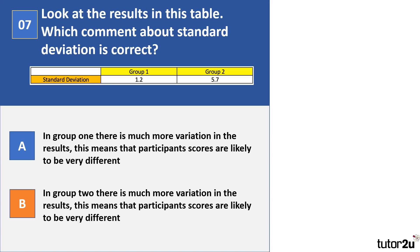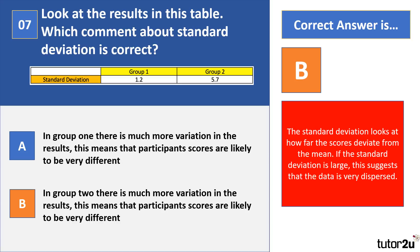Question 7. Look at the results in this table. Which comment about standard deviation is correct? A: In group one, there is much more variation in the results, meaning participant scores are likely to be very different. B: In group two, there is much more variation in the results, meaning participant scores are likely to be very different. The correct answer is B.